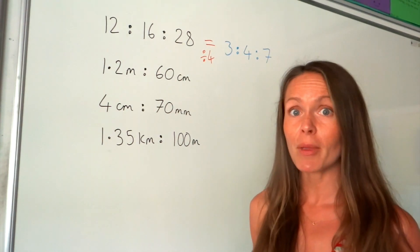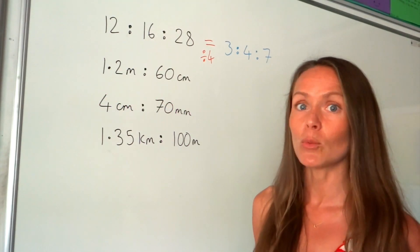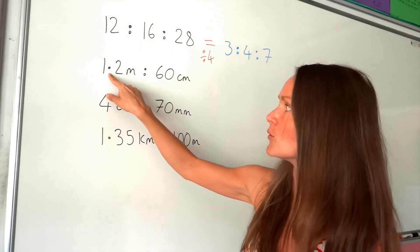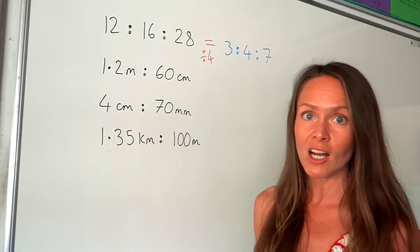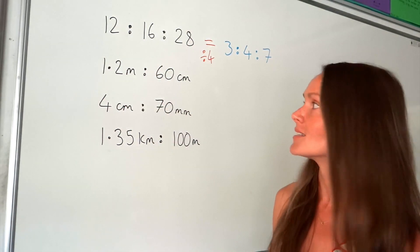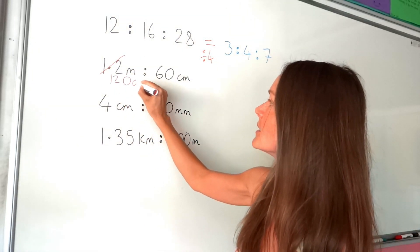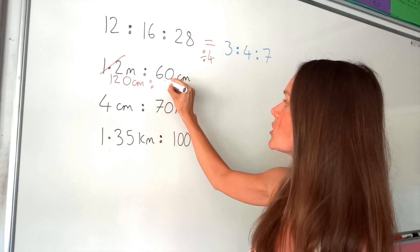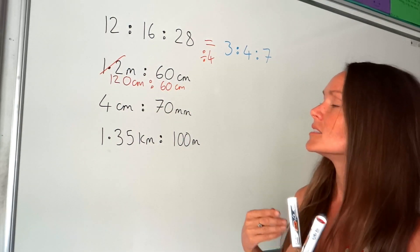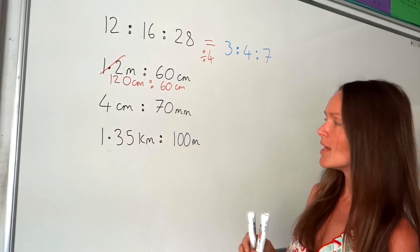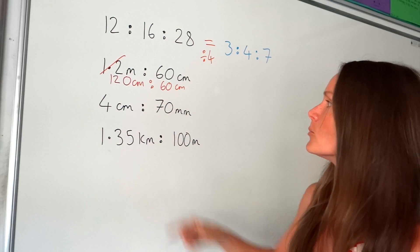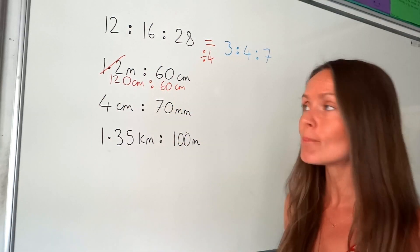When simplifying ratios, you have to make sure the units are the same, and remember we don't want decimals. So I'm going to change this one into centimetres — at the same time that gets rid of the decimal. There are 100 centimetres in a metre, so I multiply by 100, giving me 120 centimetres. Now both values are in centimetres. If I can't spot the highest common factor straight away, I can see that 10 is a common factor since both end in zeros, so I'll divide by 10.